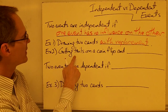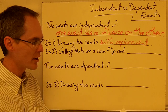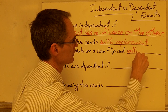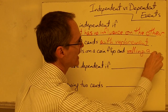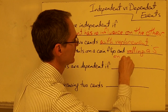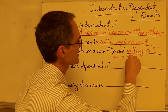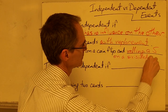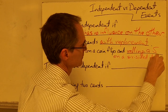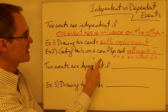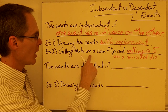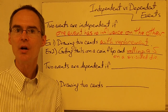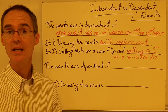Another example of independent events would be getting tails on a coin flip and rolling a five on a six-sided die. It's not too hard to see how these two events would be independent. Flipping a coin and rolling a die — those two events have no influence on each other. One doesn't impact the other event in any way.